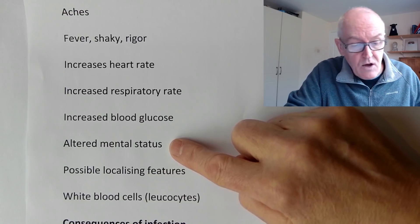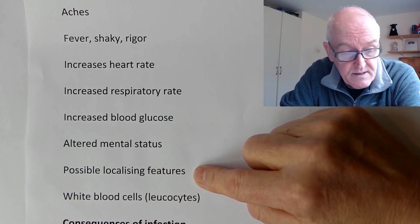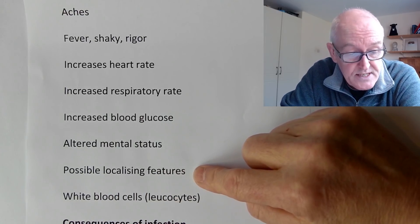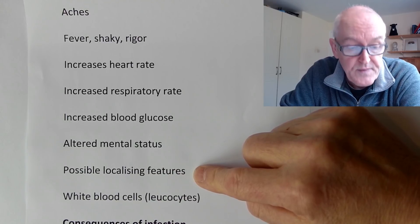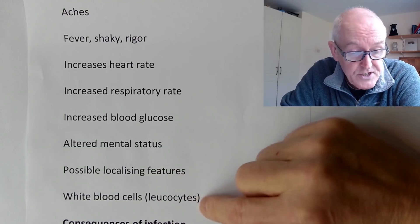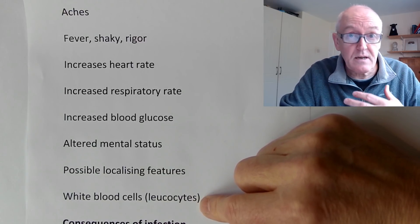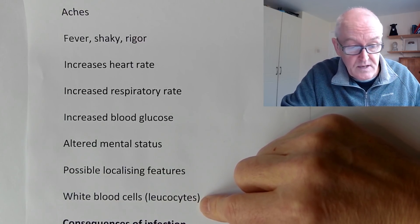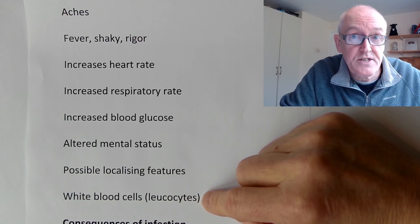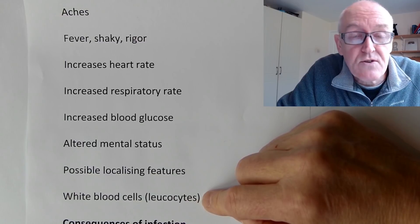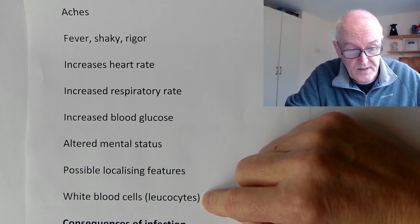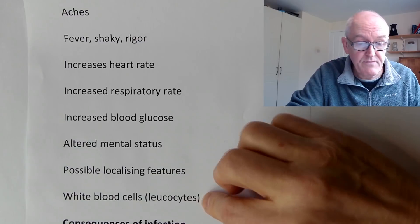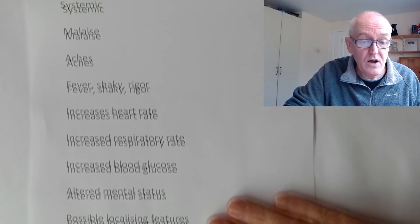There can be localizing features. If the infection is in your bladder, then you'll get possible pain when passing urine. If the infection is in your chest, then you can get a cough and shortness of breath. If the infection is in your gastrointestinal tract, then you can get diarrhea and vomiting. So these are all features of infection - this is how we know we're ill.